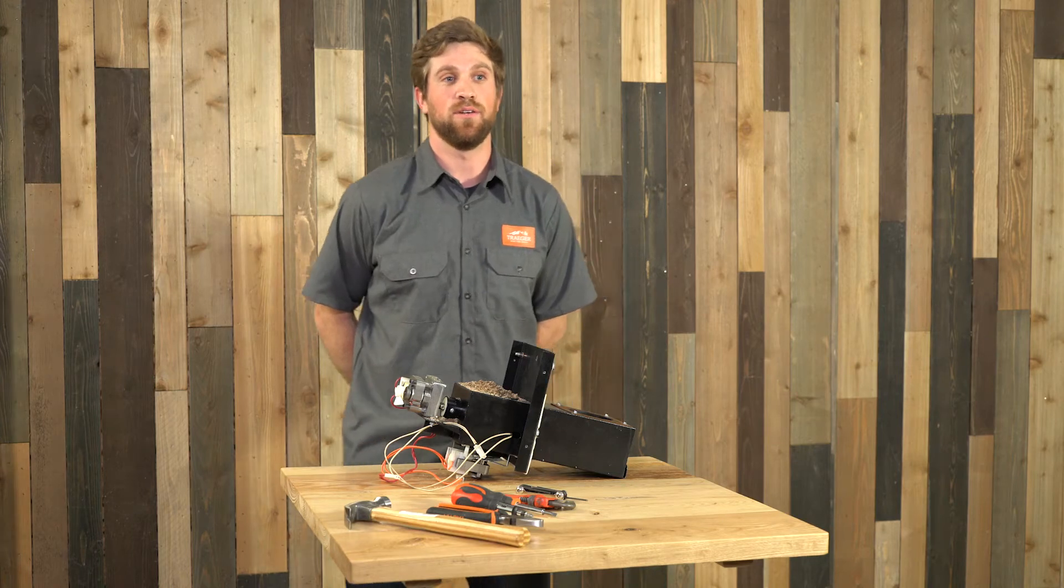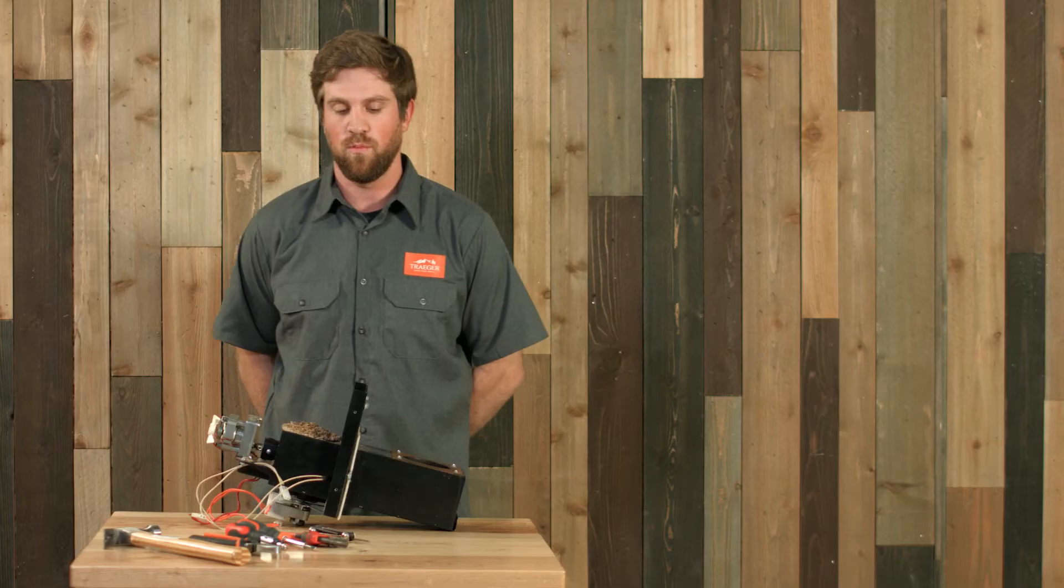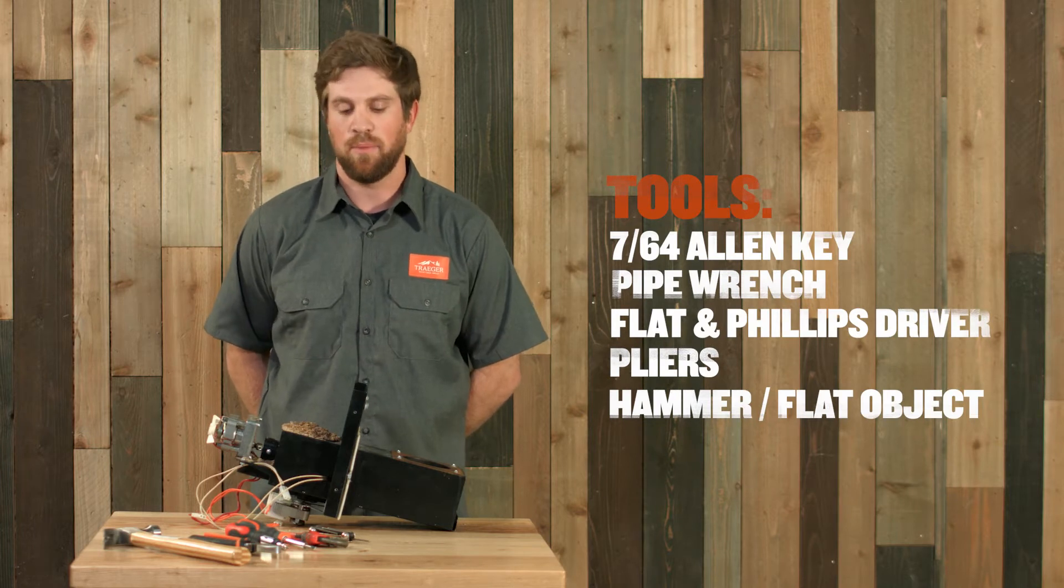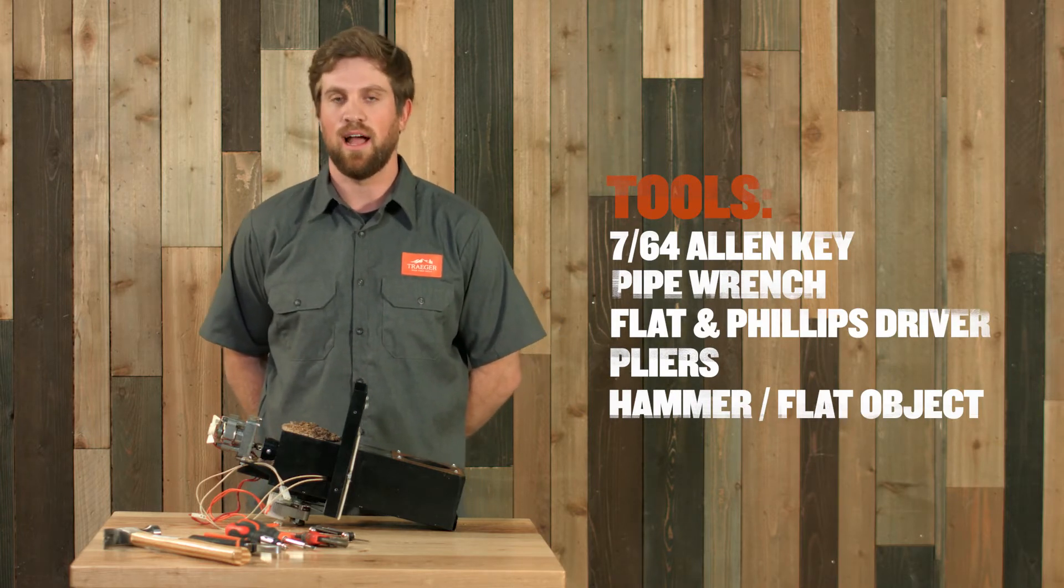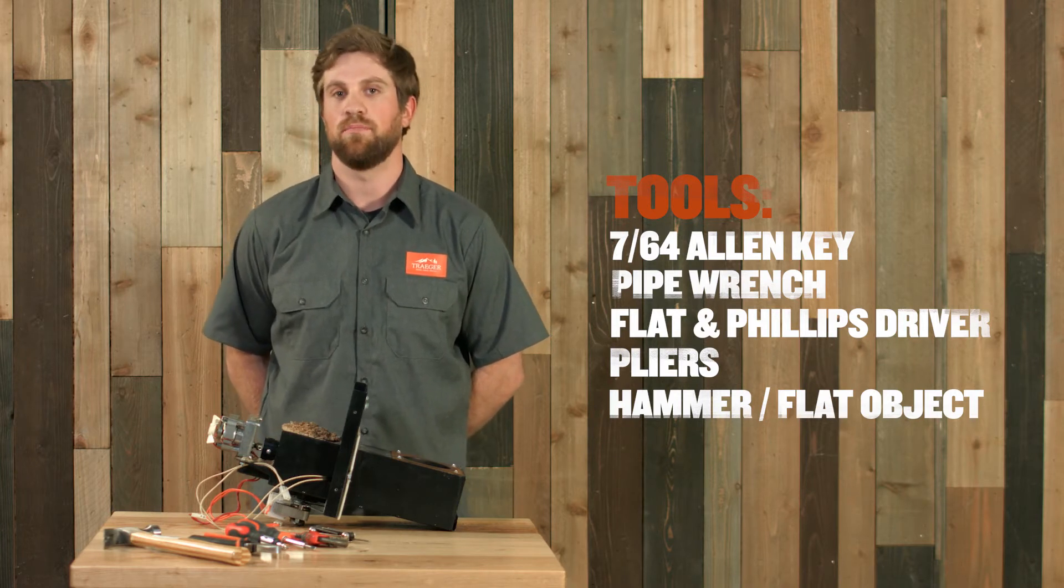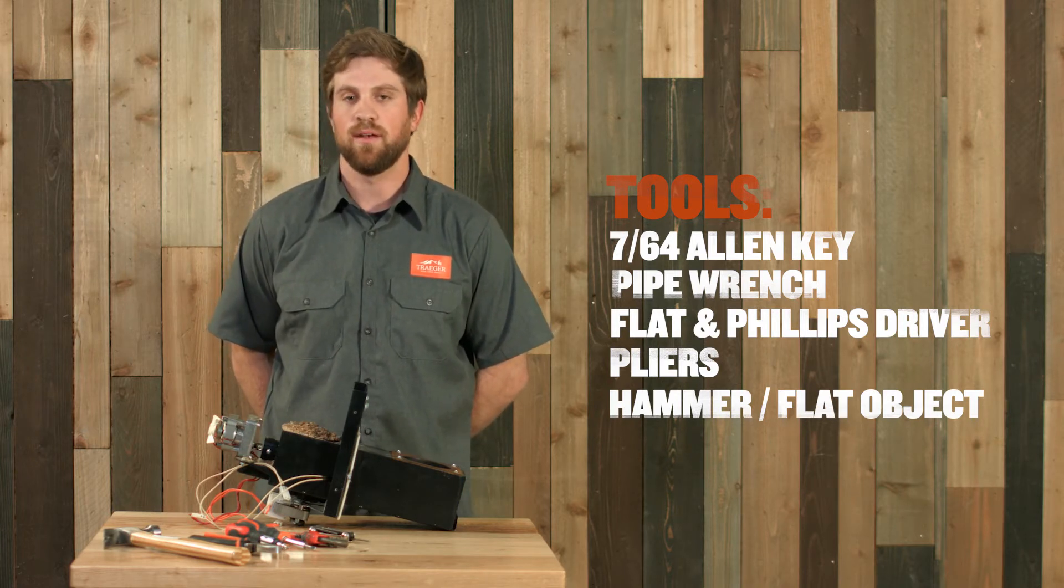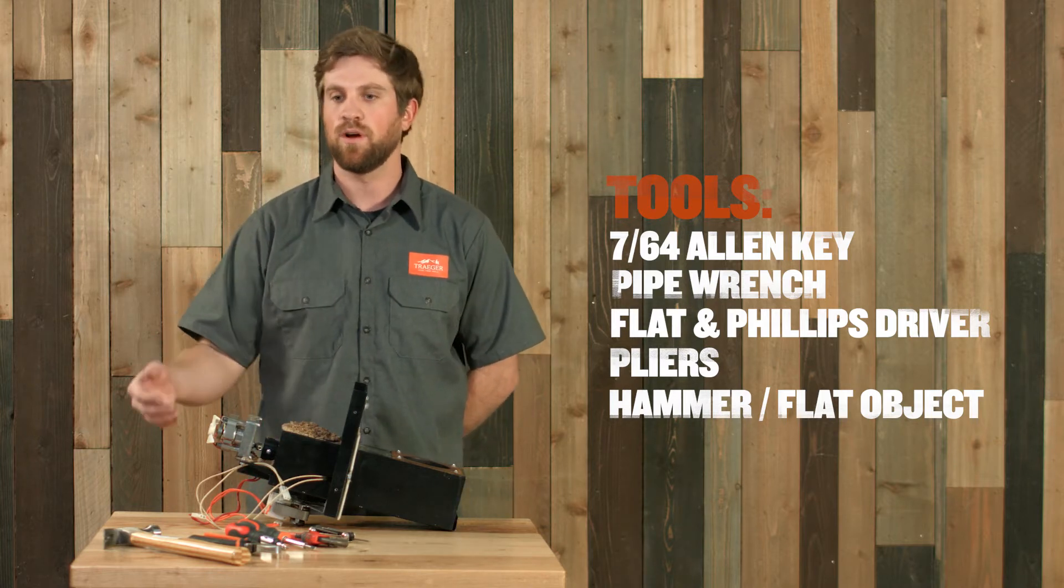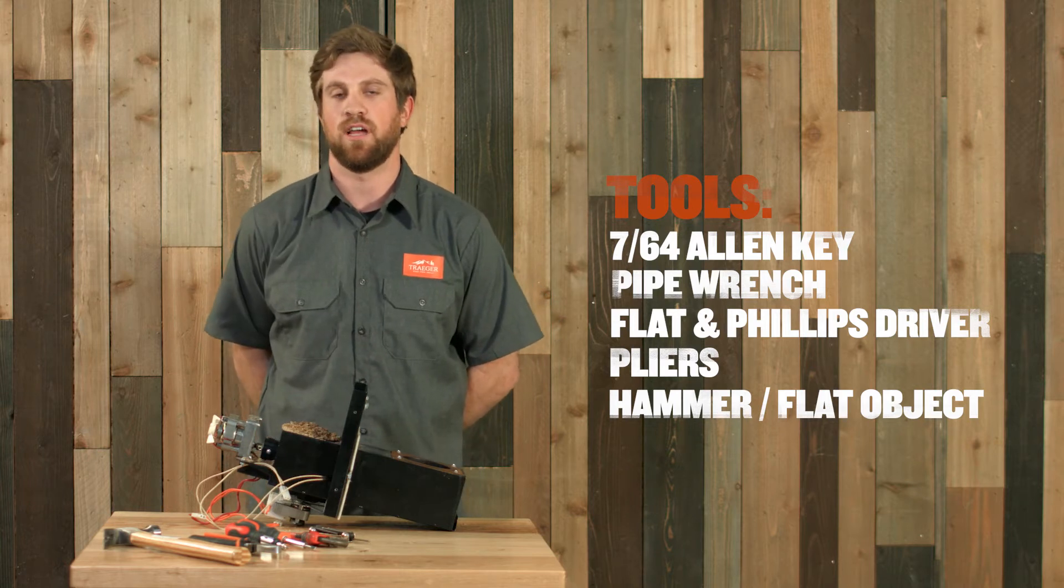There's a couple tools that you're going to need to get rid of your auger jam. One of them is going to be a 7/64 Allen key, a pipe wrench. You may also need a flathead screwdriver and Phillips head screwdriver, as well as a set of pliers and something that has a flat edge on it. We have a hammer here. We're going to use that to clean out the stuff that's in the auger shaft.